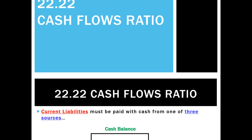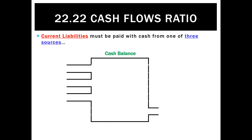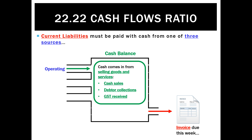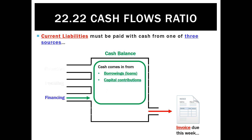Our final liquidity ratio is the cash flows ratio. It's a great ratio because it takes the notion that if we've got an invoice or some sort of bill that's due this week as a current liability, it's got to be paid from only one of three places: either the cash comes into the business from operating activities — selling goods and services from cash sales, collecting money from debtors, collecting GST — or we're going to have to pay that invoice from investing activities, meaning we'd have to sell a non-current asset, or we get the money from financing activities, so that would be money from borrowings or capital contributions.